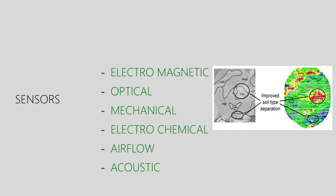The sensors used in this IoT device include electromagnetic sensors, analog optical sensors, mechanical sensors, electrochemical sensors for fertilizers, air flow sensors, and acoustic sensors.